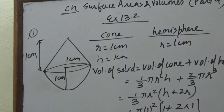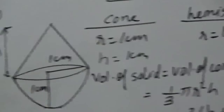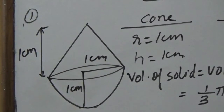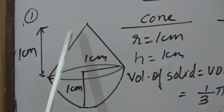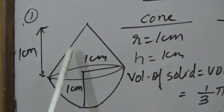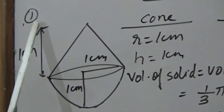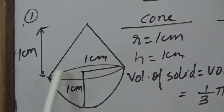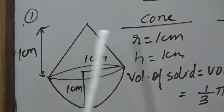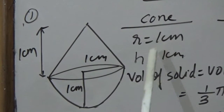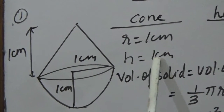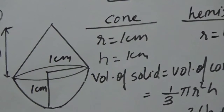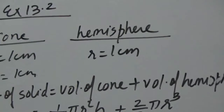Both their radii are equal to 1 cm and the height of the cone is equal to its radius. So both the hemisphere and cone have radius 1 cm. The height of the cone equals the radius of the hemisphere, which is also 1 cm.